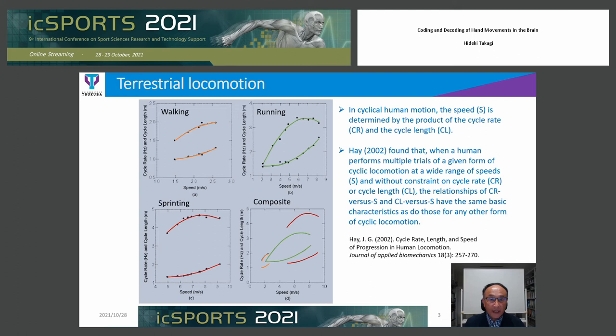Dr. Hay found that when a human performs multiple trials of a given form of cyclic locomotion at a wide range of speeds and without constraint on the cycle rate or cycle length, the relationship of CR versus S and CL versus S have the same basic characteristics as do those for any other form of cyclic locomotion. In fact, the CR versus S curve was the same.